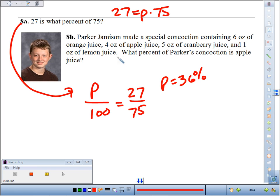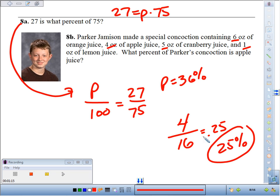6 and 4 makes 10, and 5 makes 15, and 1 makes 16 ounces total. 4 of the 16 are apple juice, so 4 out of 16 is what percent? That's 0.25, so that's going to be 25% of the concoction is apple juice.